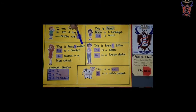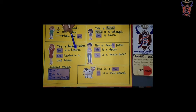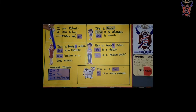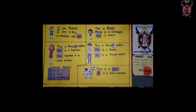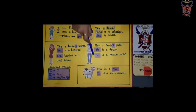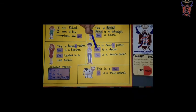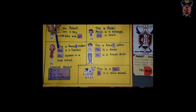Annie ke mammi ke jaga pe, hum ne kya use kiya hai? She. She is a teacher. So, Annie's mother is a teacher. She teaches in a local school. Woh ek local school mein padhati hai. What is the difference that we see? For a boy or a man, we wrote he. But for a girl or a lady, we wrote she.